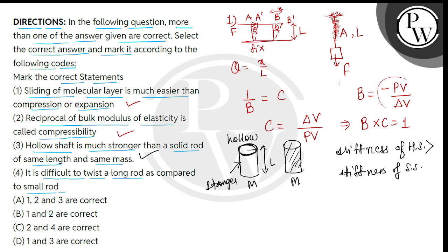Now, statement 4, it is difficult to twist a long rod as compared to small rod. So, children, first of all, we consider what twisting angle will get. So, as we know, when we talk about shear, means change of shape, we get the theta that is angle of shear.